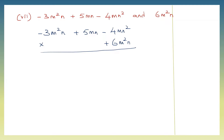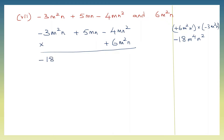First we're going to do plus 6m squared n into minus 3m squared n. First let's multiply the signs: plus into minus is minus. 6 into 3 is 18. Now m squared and m squared — that is 2 plus 2 — makes it m to the power of 4. And n: there is 1 here and 1 there, so that makes it n squared. So first we've got minus 18m to the power of 4 and n to the power of 2.